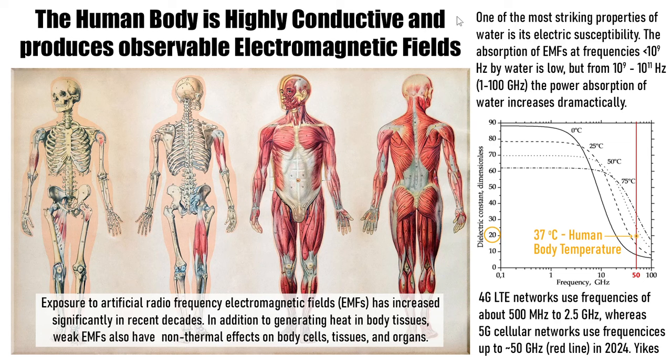One of the main reasons why we're conductive is because of water — we're basically a big sack of flesh that's water, and then there's a whole bunch of ions in there, like calcium, sodium, and more. Those are charged carriers. One of the most striking properties of water is its electric susceptibility.